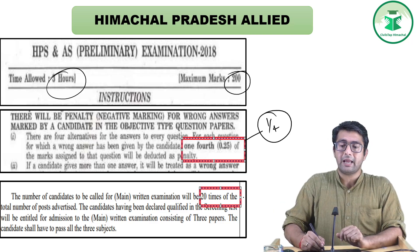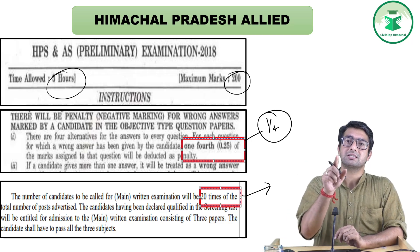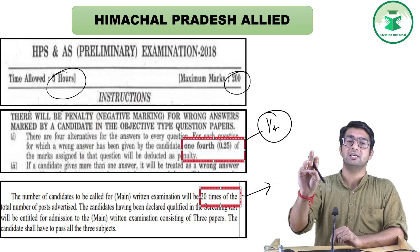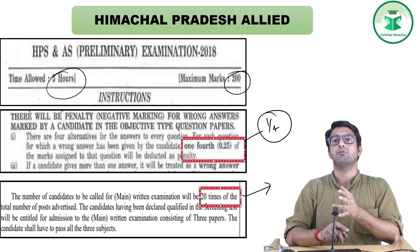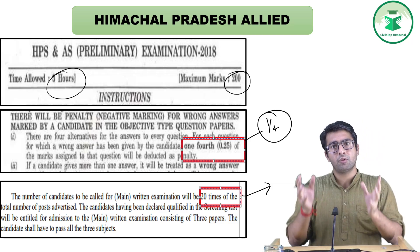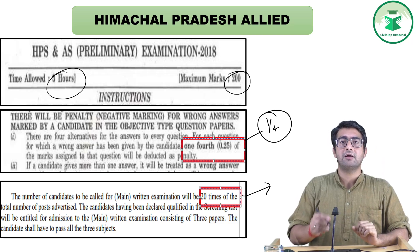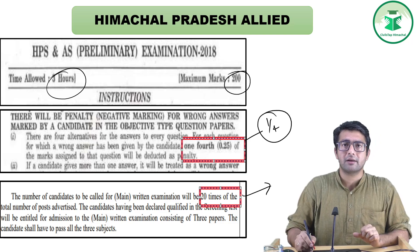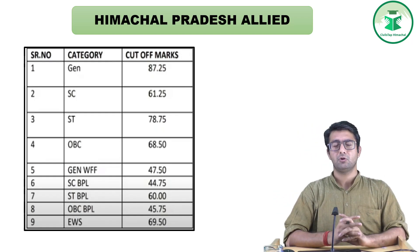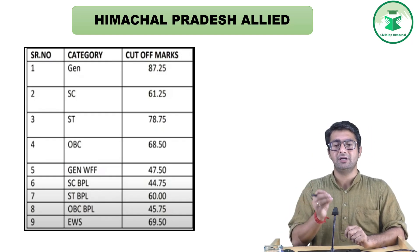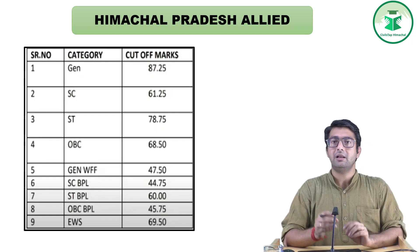Prelims में approximately 43,000 aspirants reject होते हैं और 2,000 mains के लिए qualify करते हैं। Prelims की cutoff बहुत कम जाती है — पिछले साल General category की cutoff 87.25 marks थी। SC की 61, ST की 78, OBC की 68 — यह paper सरलता से clear किया जा सकता है। 4-5 महीने की तयारी से भी prelims qualify हो जाती है।